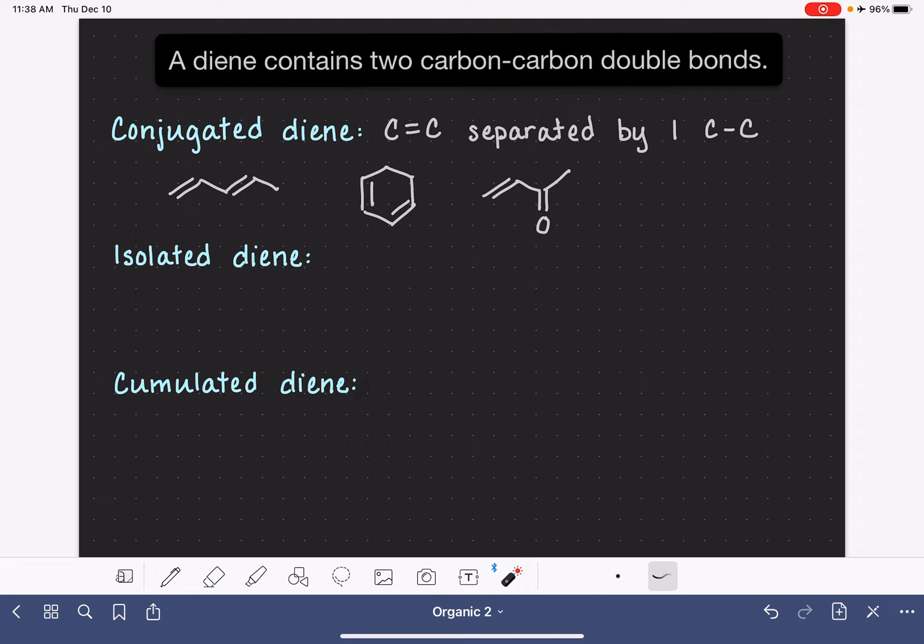Now, if there is more than one carbon-carbon single bond in between our double bonds, we refer to that as an isolated diene. So in an isolated diene, our carbon-carbon double bonds are separated by two or more carbon-carbon single bonds.